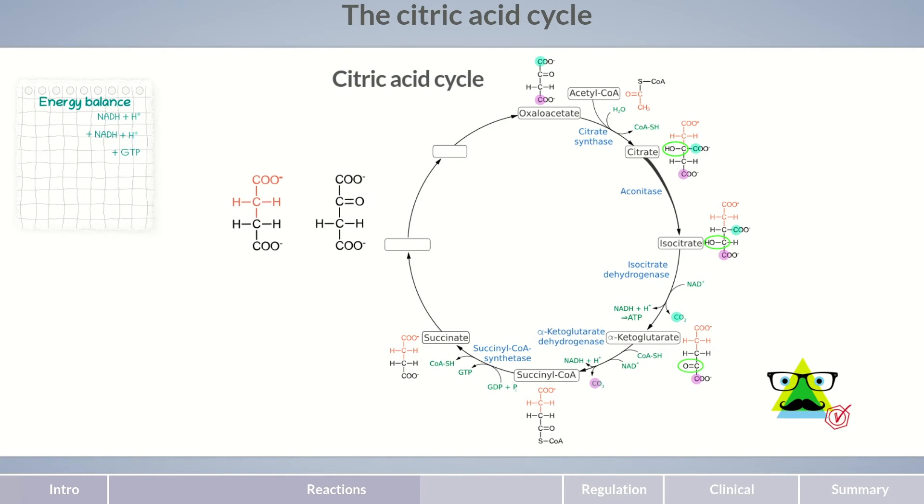If we compare succinate with the target molecule oxaloacetate, we notice that the only difference is an additional ketone group in oxaloacetate. The ketone group is in the beta position to one of the two carboxylic acid groups. Does this give you an idea of how succinate can be converted to oxaloacetate? Conversion occurs analogous to the reaction strategy of beta-oxidation.